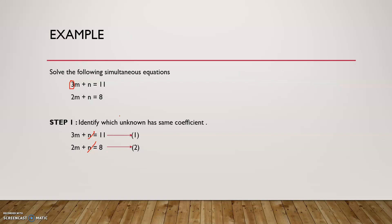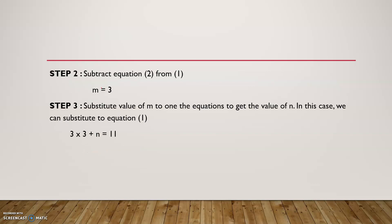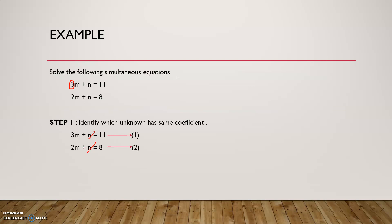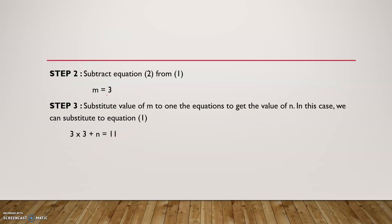So we get a value for m. That's 3m minus 2m which is 1m, the n terms cancel out, and 11 minus 8 is 3. So the value for m is 3.